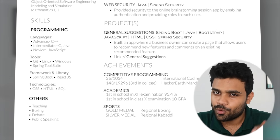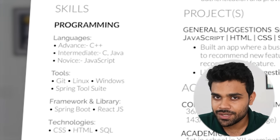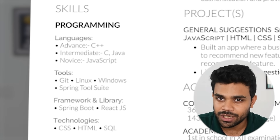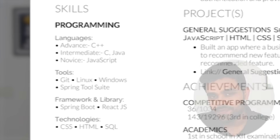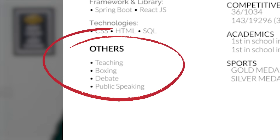The next section is skills. Skills play a very important role in matching you with a specific profile. I have two kinds of skills: programming skills and other skills. For programming skills, I have mentioned every language based on how well I know them — for example, I know C++ quite well so I listed it as advanced, and I'm intermediate in Java. You can mention your entire tech stack, all frameworks, and all technologies you have worked upon. Apart from programming skills, I have other skills such as boxing, debate, and public speaking, which you can mention in the other skills section.